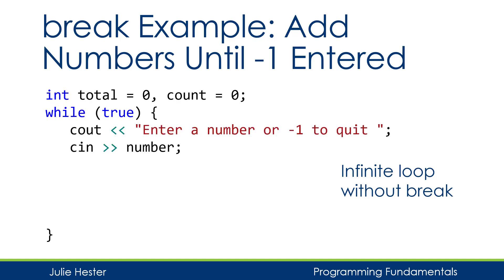I'll display a prompt asking the user to enter a number, or negative one to quit. Sometimes that's called a sentinel — a special value that tells us the user is finished. I'll get the number from the user and immediately test it to see if it is the sentinel value. If the number equals negative one — and I need to use the double equal operator here — I'm completely finished getting numbers. I don't even want to process that number, so I'll break and completely exit the loop. When break is hit, no more lines of code in this loop execute, and execution goes to the next statement after the loop.